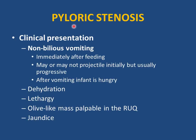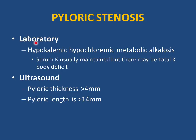Clinical presentation of pyloric stenosis: non-bilious vomiting usually immediately after feeding, initially may or may not be projectile but becomes progressively projectile. After vomiting, the infant is hungry. With persistent vomiting, the child becomes dehydrated, lethargic, and weak. On physical examination, an olive-like mass may be palpable in the right upper quadrant. The child may become jaundiced with dehydration, but jaundice resolves with hydration. Labs show low potassium, low chloride, and hypokalemic metabolic alkalosis — note that serum potassium may appear normal despite total body deficit.